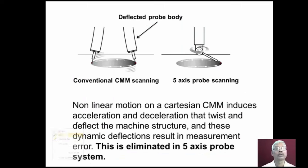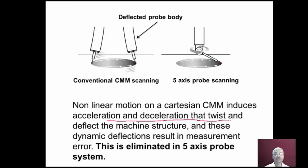Non-linear motion on a Cartesian CMM induces acceleration and deceleration that twist and deflect the machine structure, and these dynamic deflections result in measurement error. This is shown by a deflected probe body when using a conventional probe, compared to a 5-axis scanning type probe. This problem is eliminated by using the 5-axis probe system.